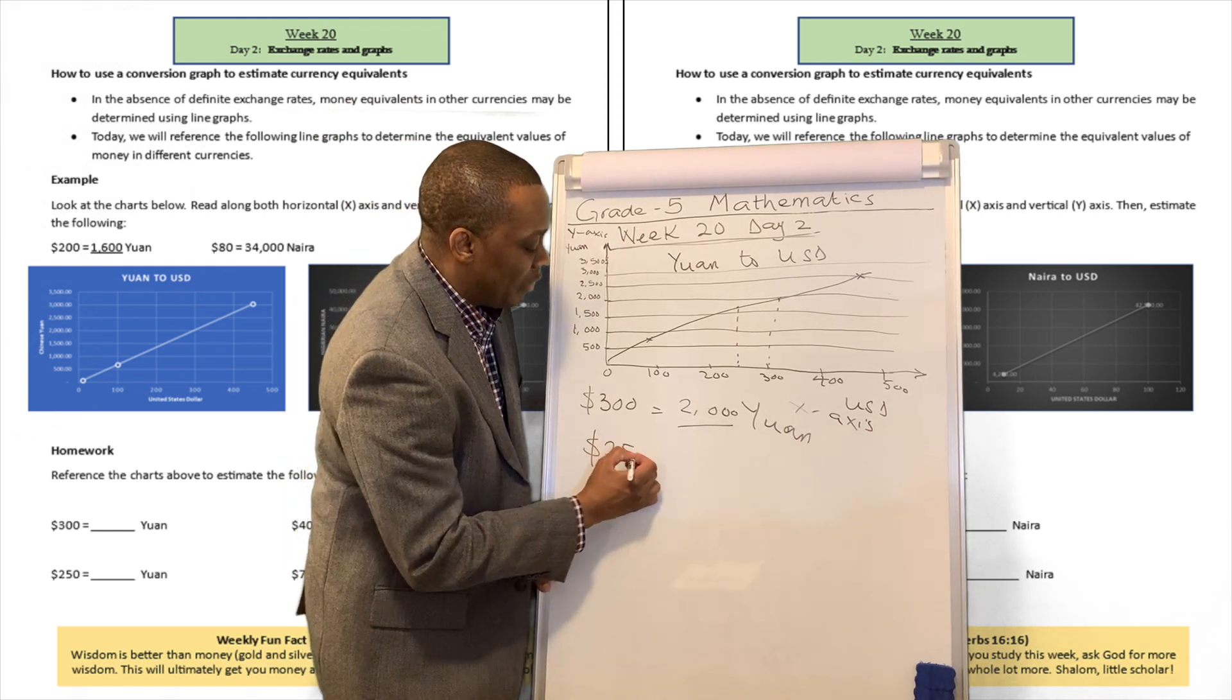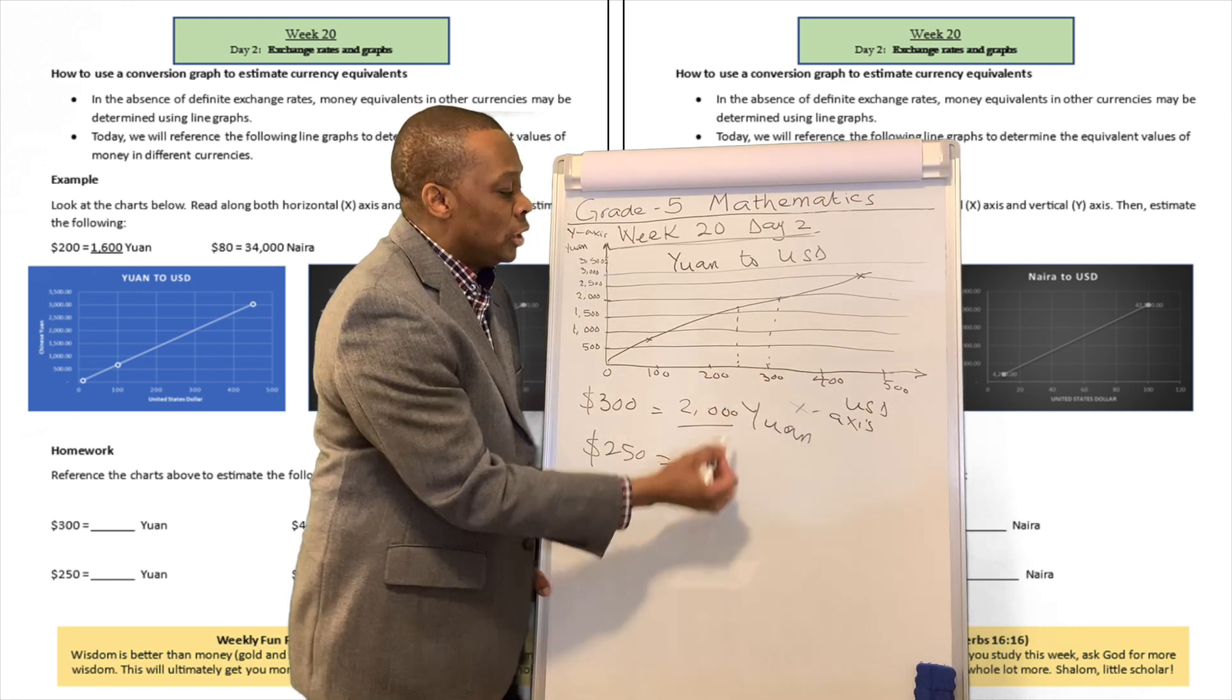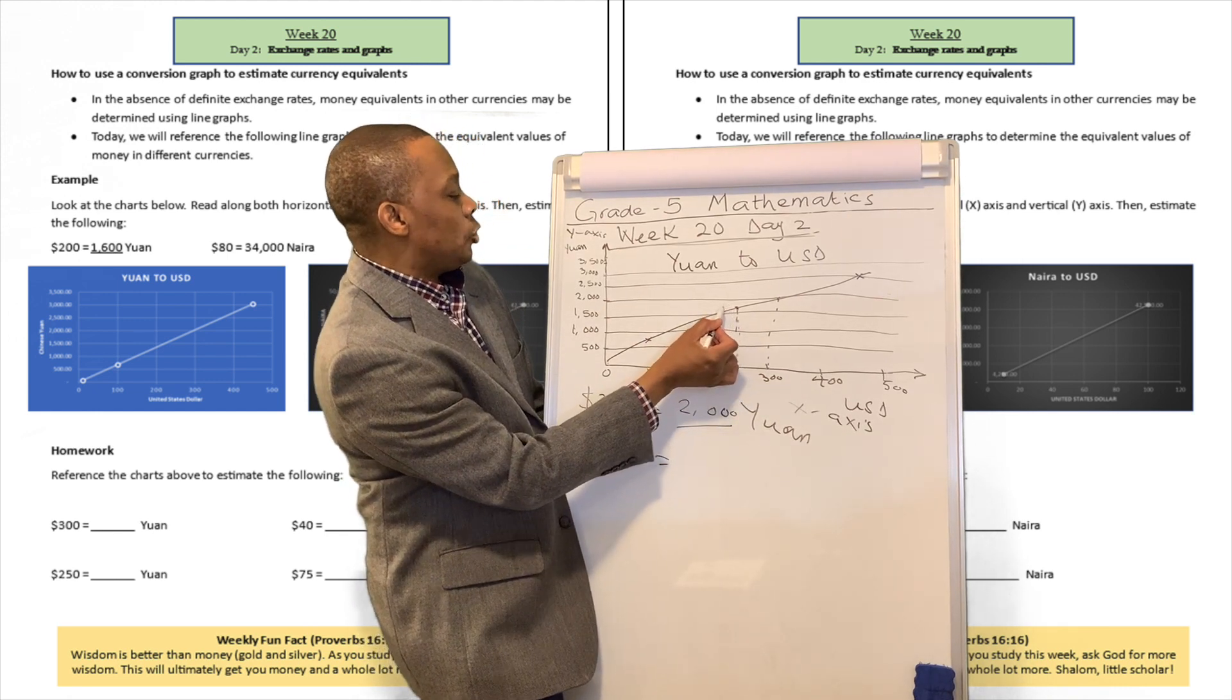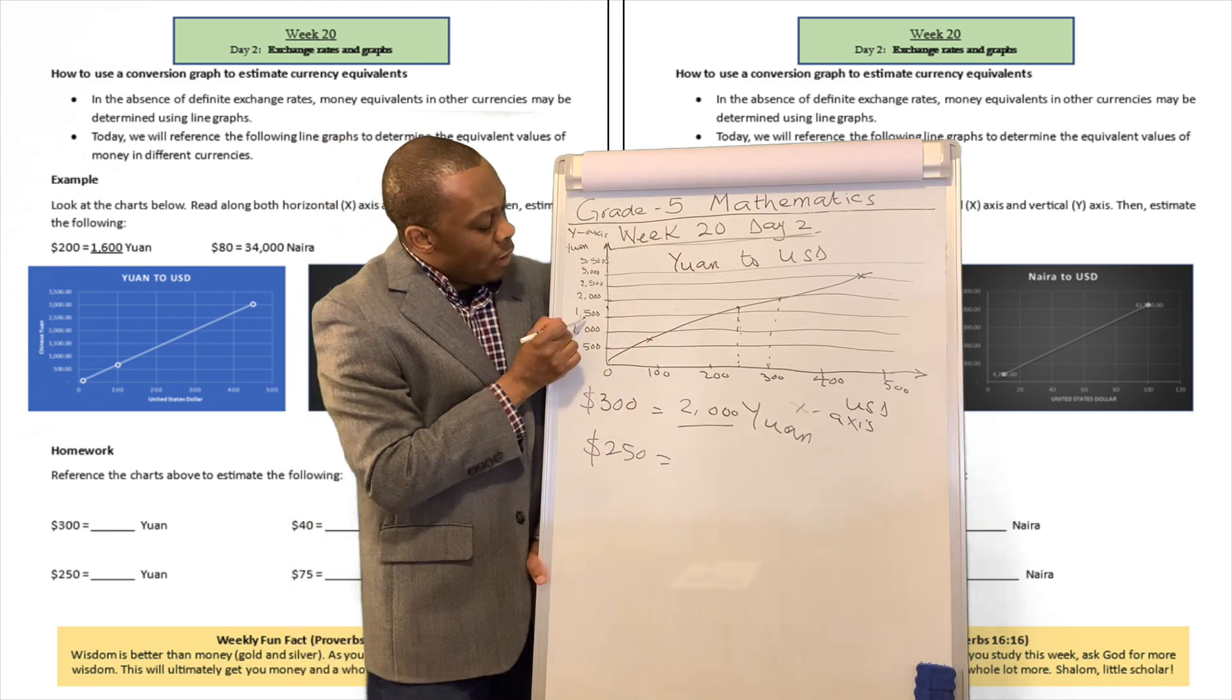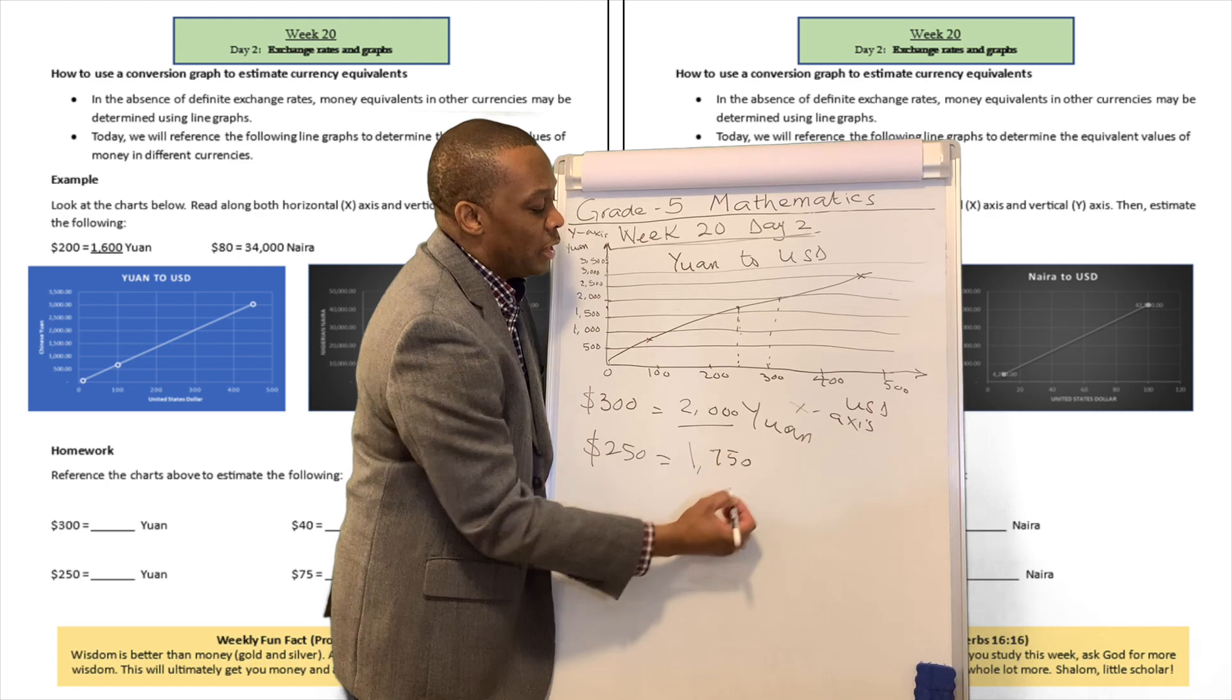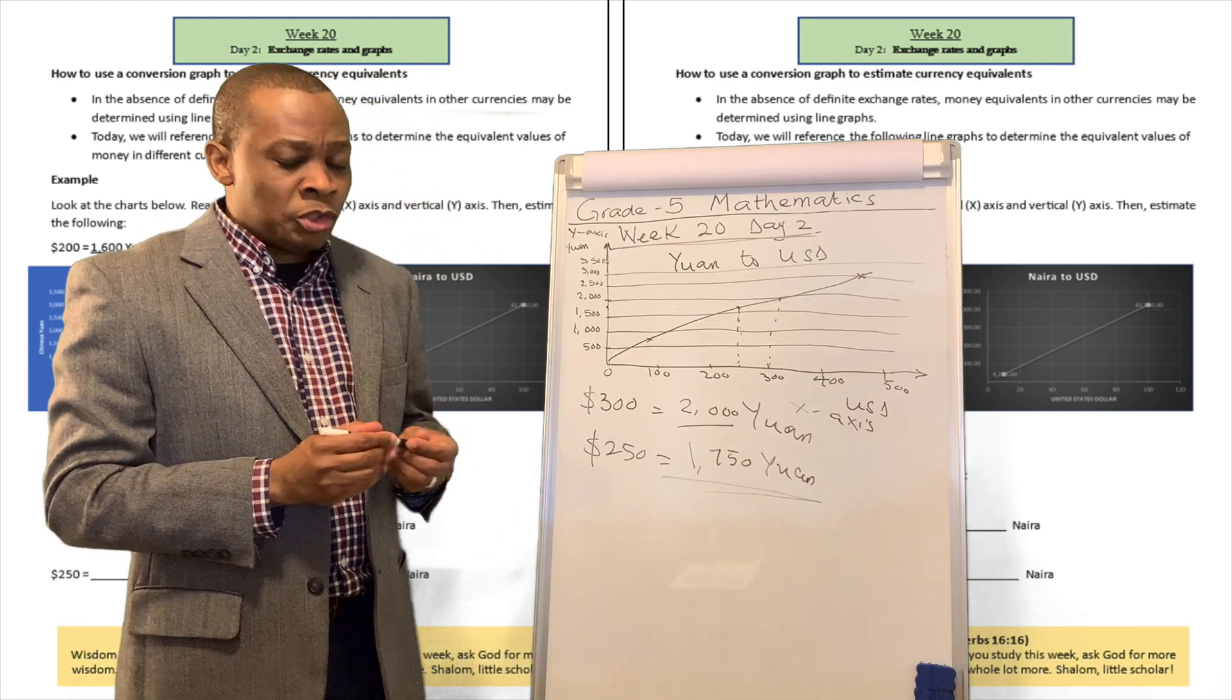What about $250? Well, $250 is going to be midway point between $200 and $300. Then you draw a vertical line to meet the line chart, and you meet the line over there. Then you trace it back to the vertical axis. So it seems like it's going to be in between $1,500 and $2,000, which is going to be 1,750 yuanes, just like that. That's how you can read your graphs, read your charts.